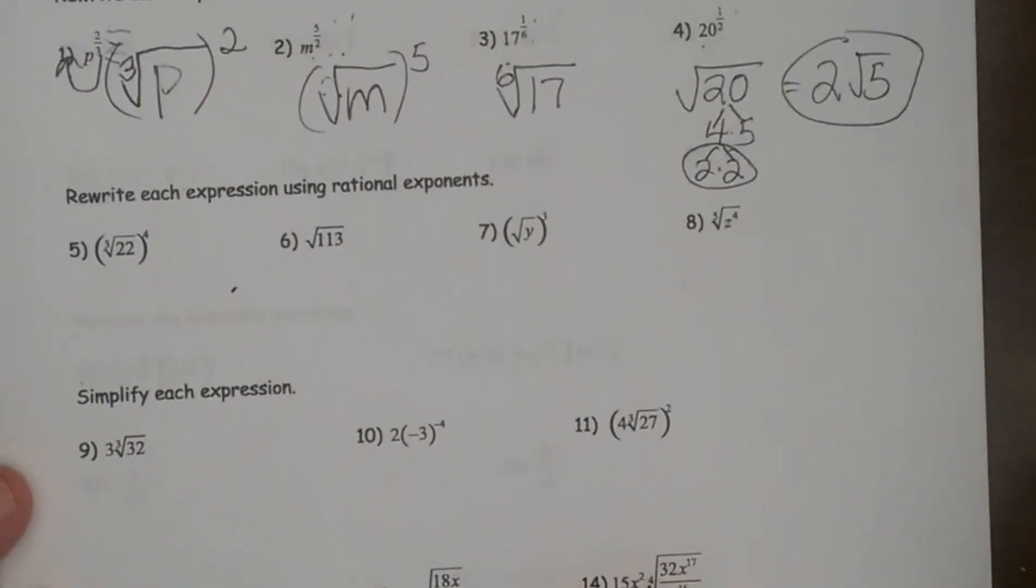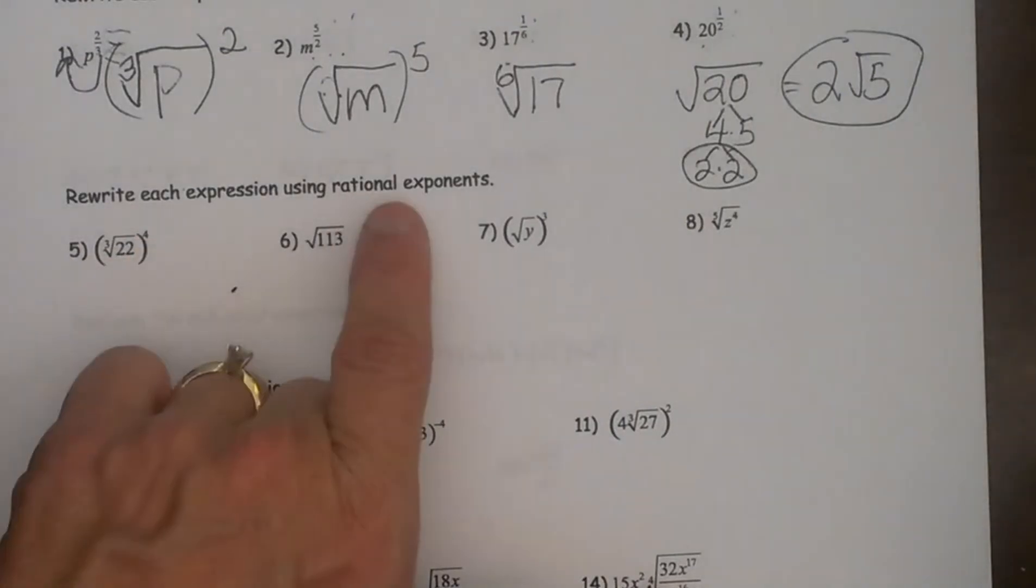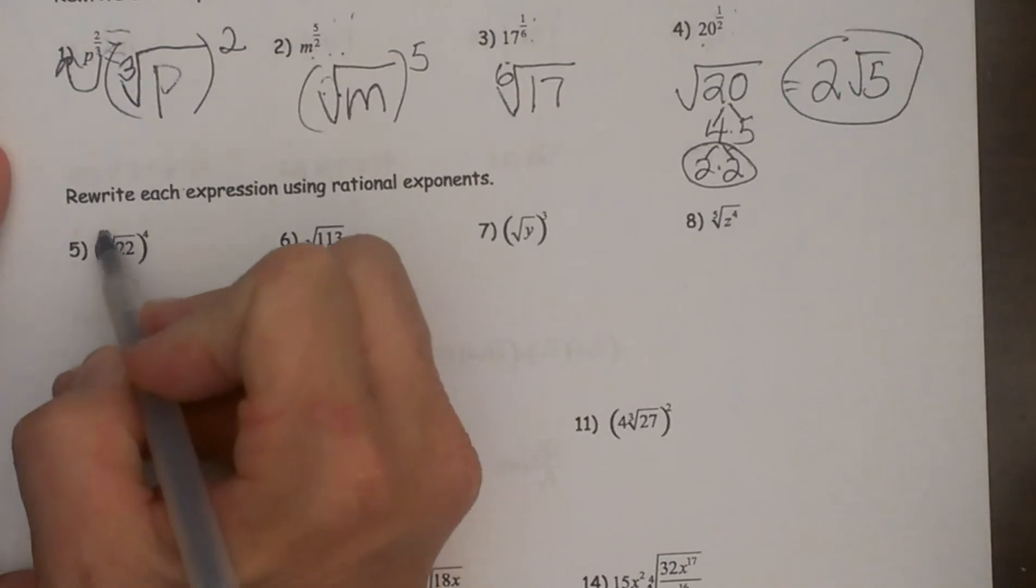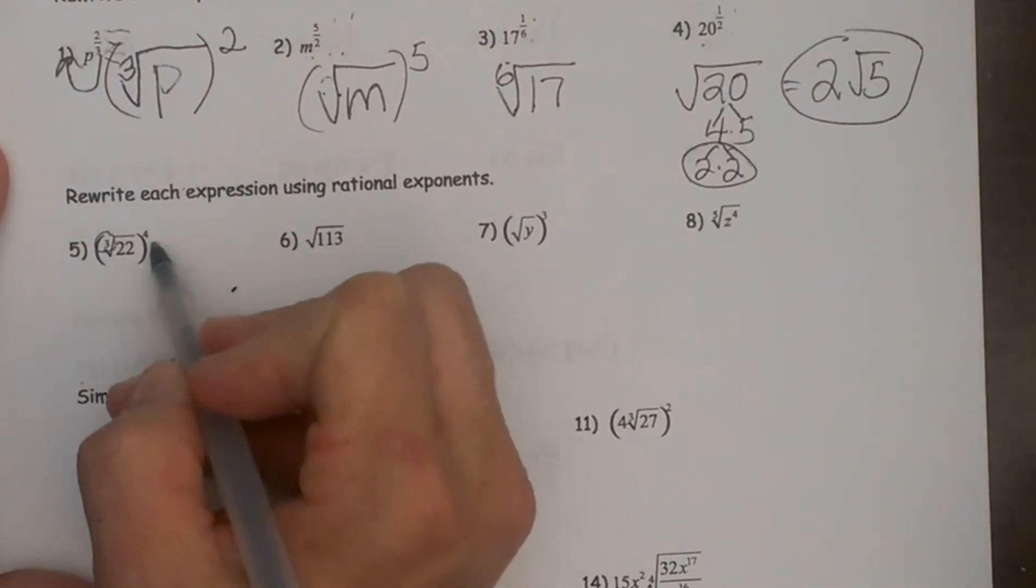Now let's reverse it. Now we have a radical form and we are switching back to rational exponents or fractional exponents. So that means whatever the root is becomes the bottom or the denominator of our fraction.